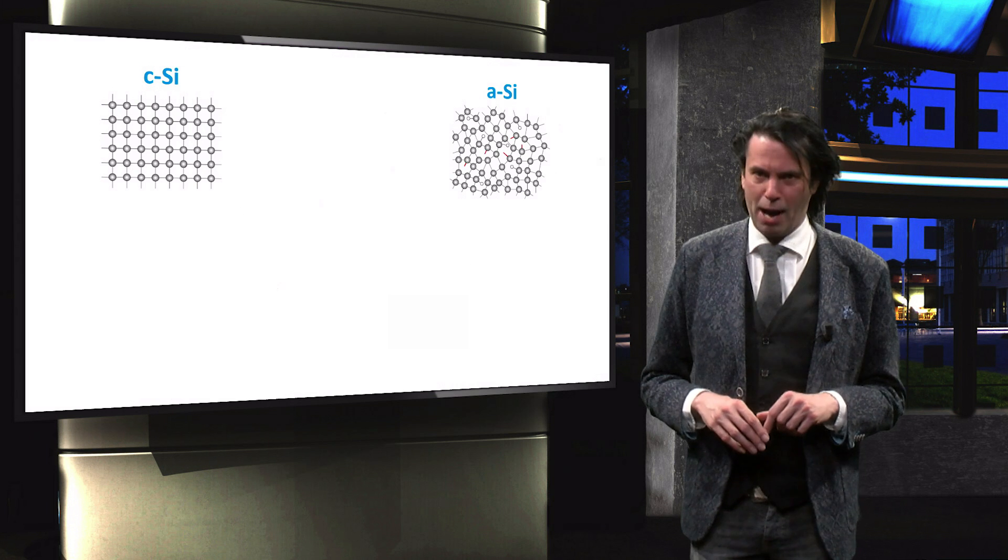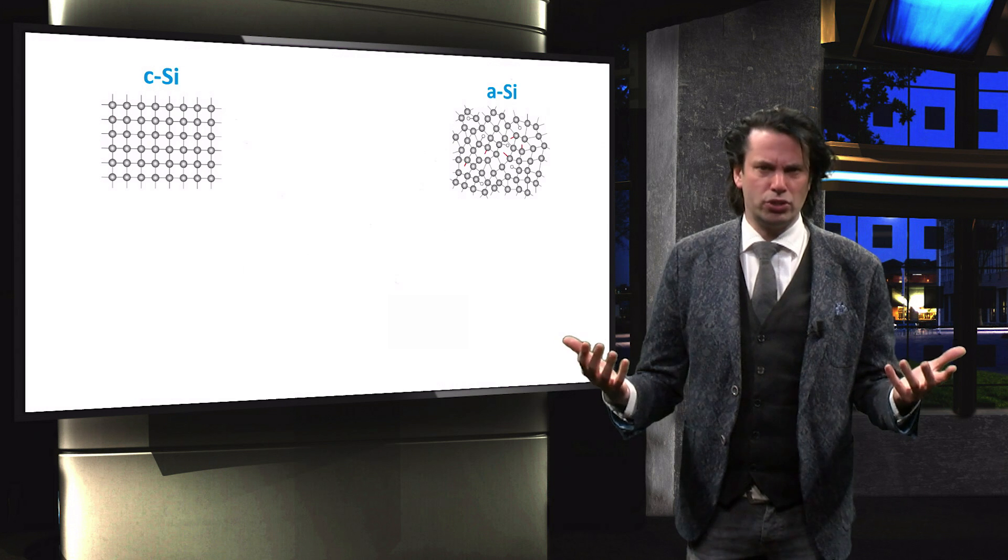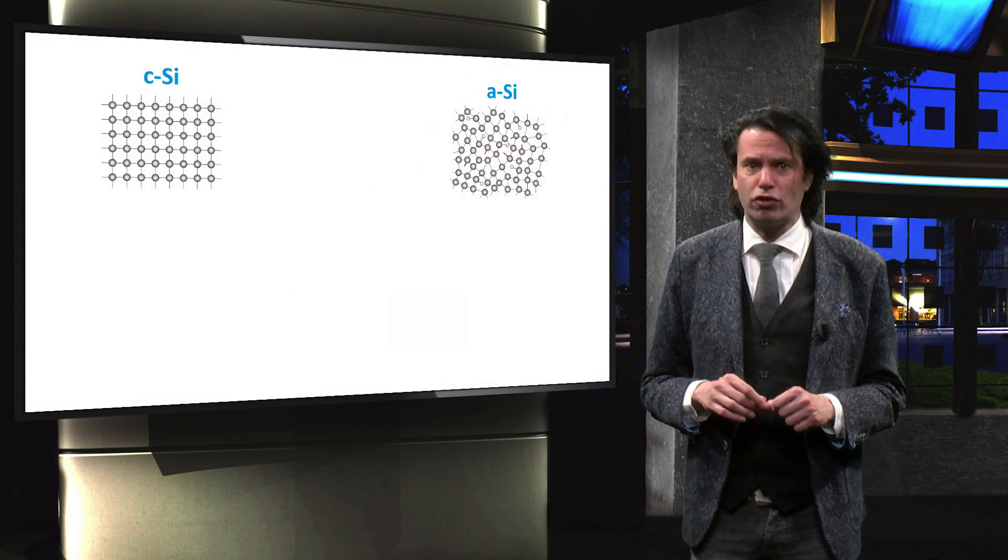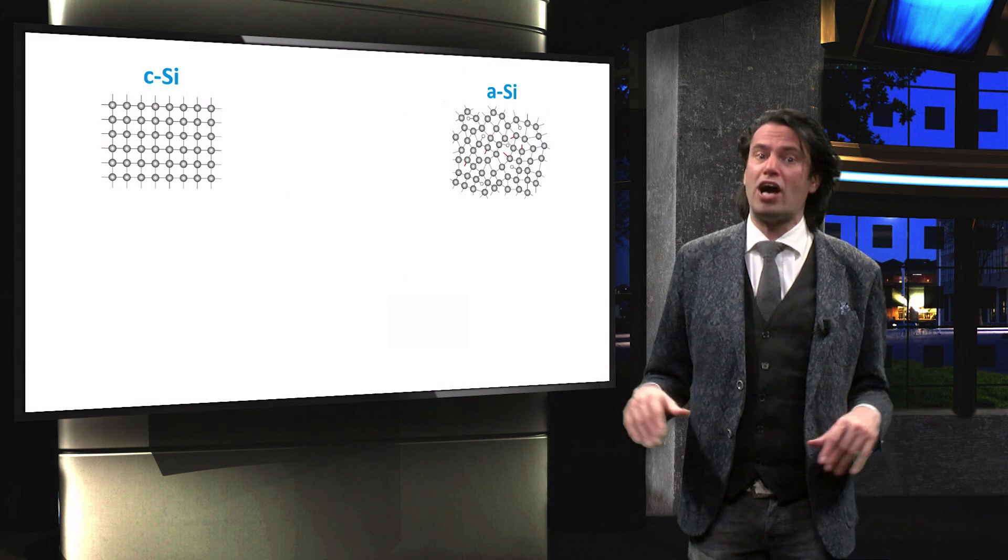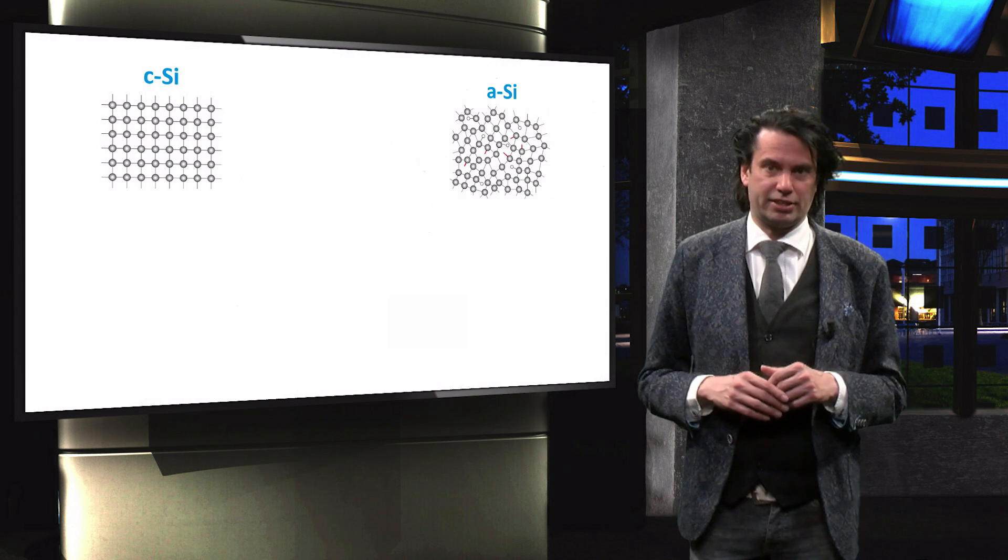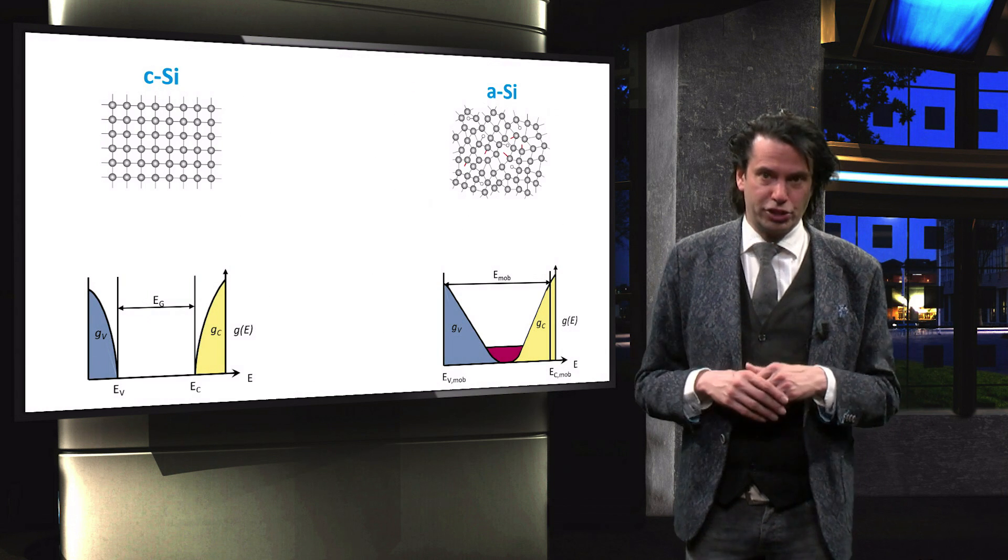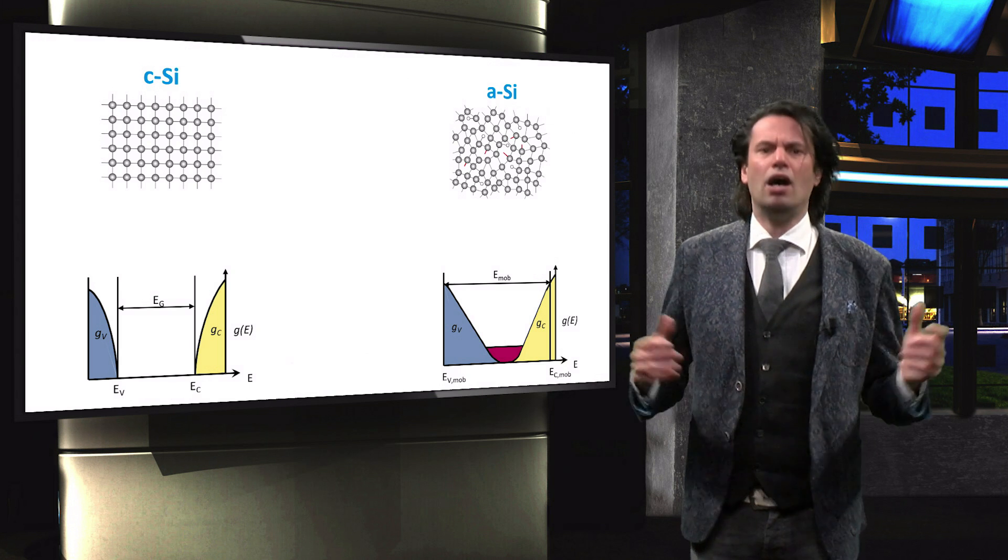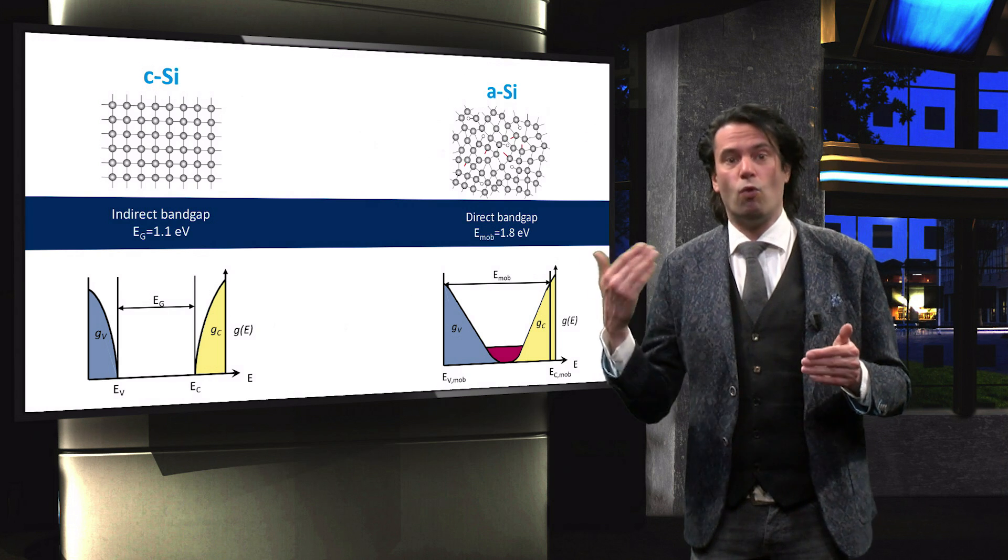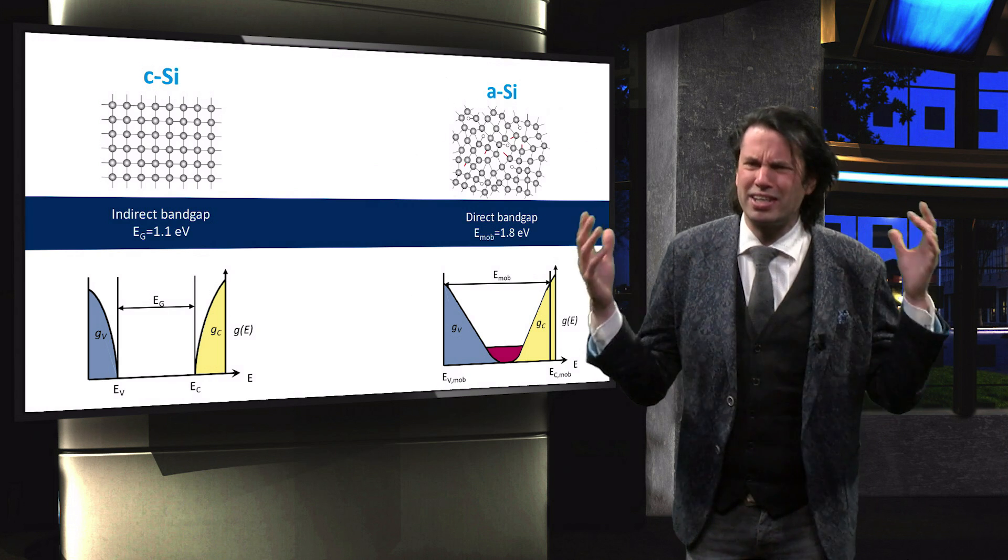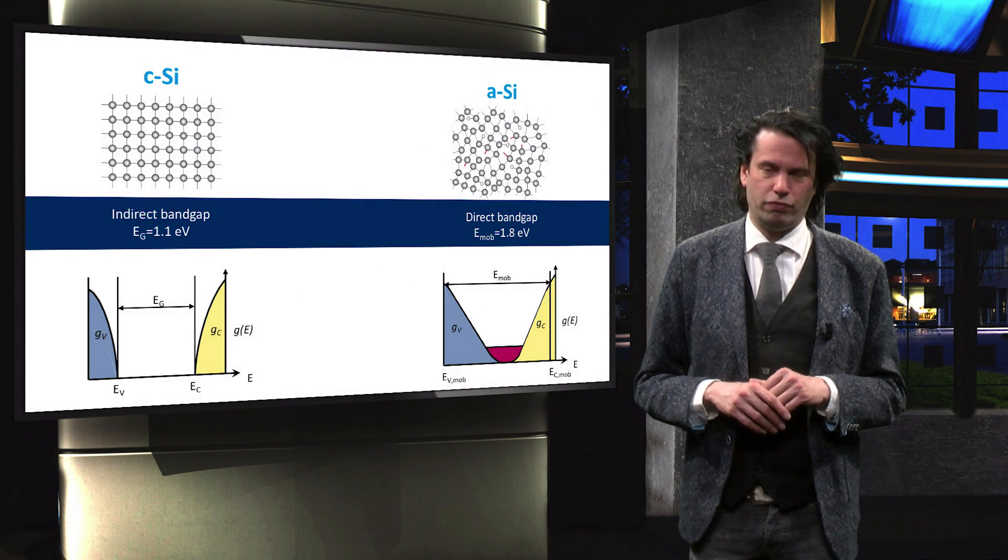Time for a short recap. We have discussed how crystalline silicon consists of a well-ordered lattice, while amorphous silicon consists of a continuous random network. This random network causes amorphous silicon to have a much higher defect density. We also saw how these defects create allowed energy states in the band gap. Amorphous silicon therefore has a direct band gap of between 1.6 and 1.8 eV, while crystalline silicon has an indirect band gap of 1.1 eV.